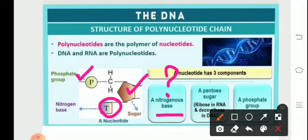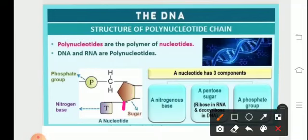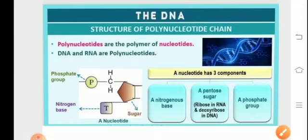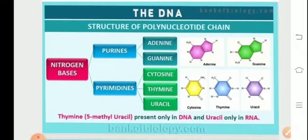The pentose sugar means it is a five-carbon sugar, comprising the first, second, third, fourth, and fifth carbon atom — the fifth being present as CH₂OH. The sugar in the case of RNA is ribose, and in the case of DNA it is deoxyribose.